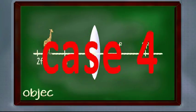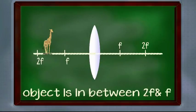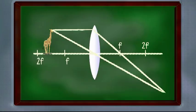Case 4, when object is in between 2f and f, again repeating the same ray order. The rays converge away from the 2f on the other side of the lens. And the image is inverted and enlarged.